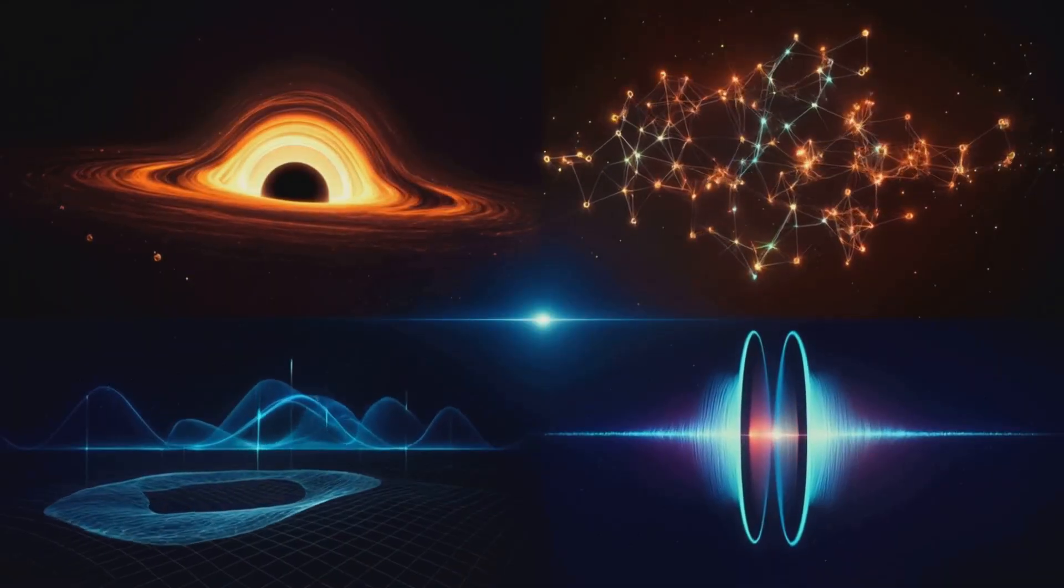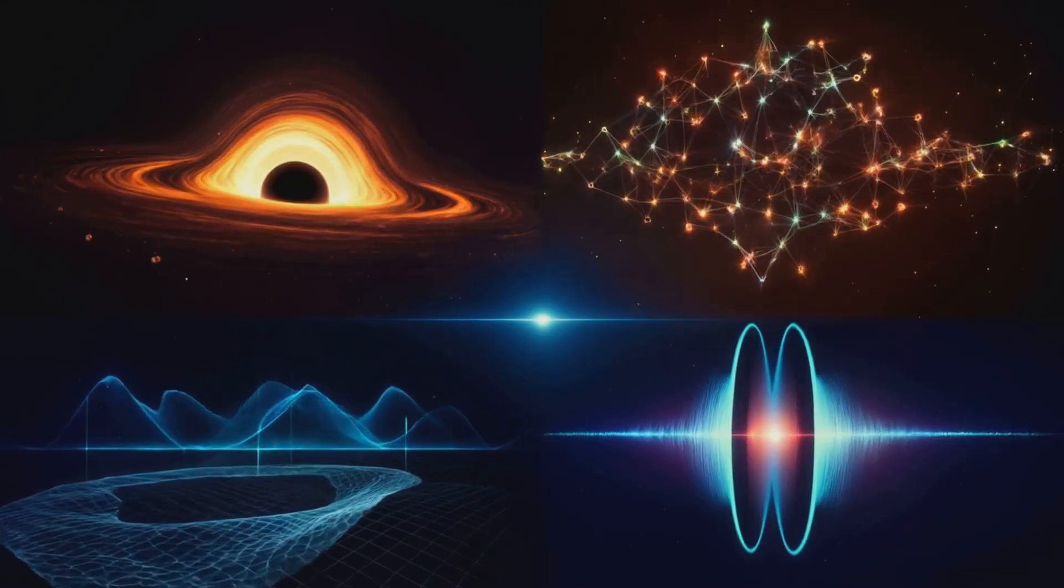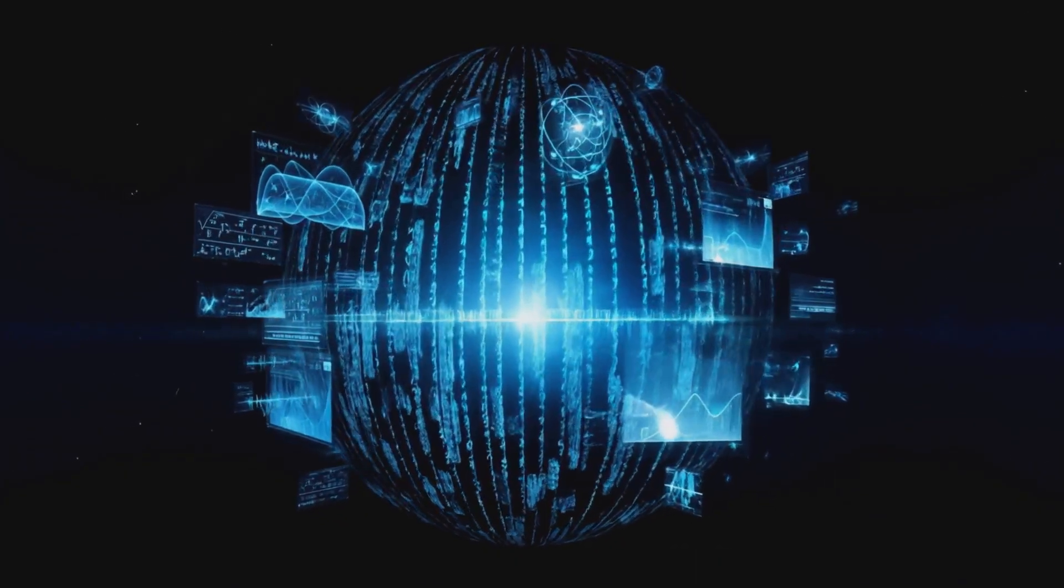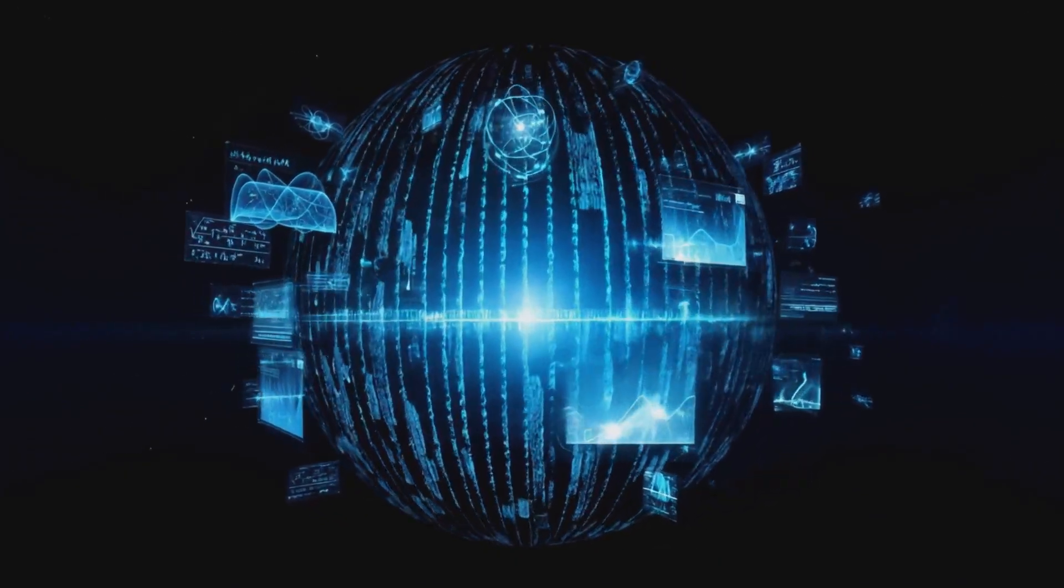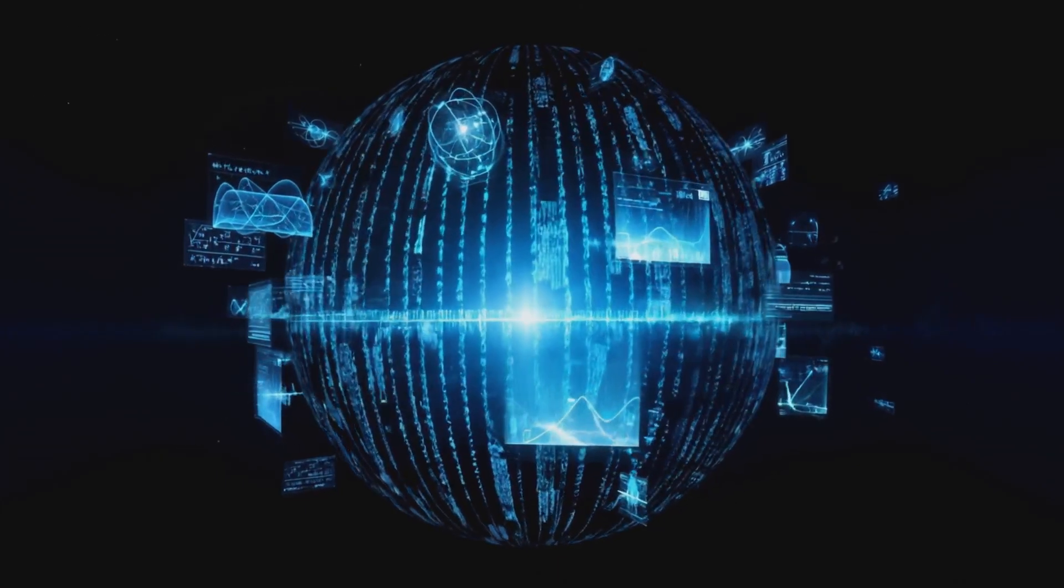It's a two-dimensional image containing all the information needed to recreate a three-dimensional object. QIH suggests our universe works similarly. The information about everything, stars, planets, even you and me, is encoded on a distant two-dimensional surface.